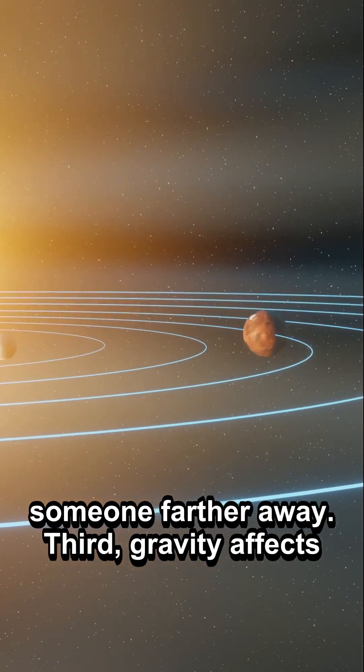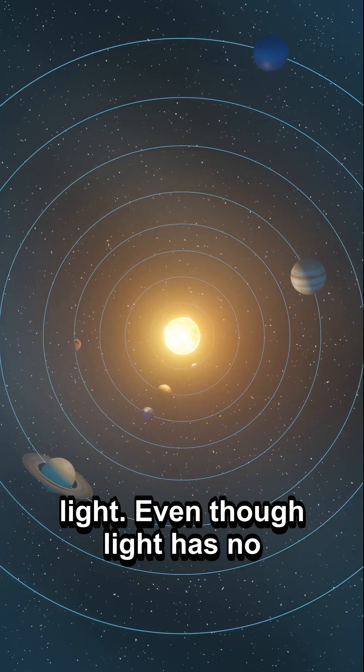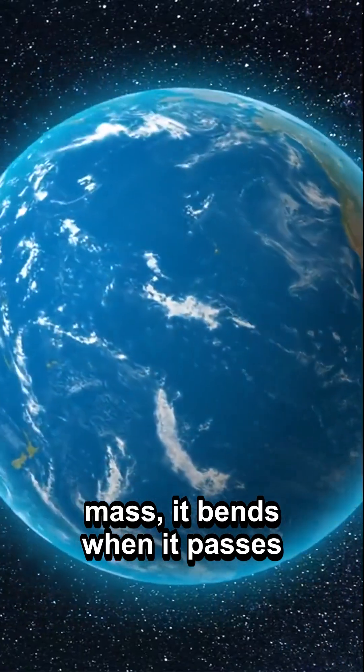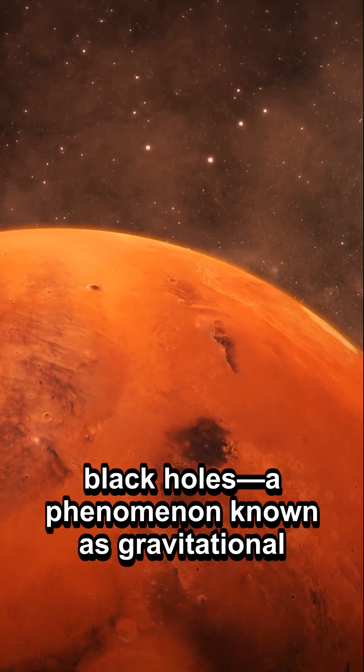Third, gravity affects light. Even though light has no mass, it bends when it passes near massive bodies, like stars or black holes, a phenomenon known as gravitational lensing.